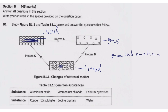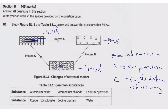Sublimation is the direct change of state from a solid to a gas when you heat that substance. Process B is a change from liquid to gas, so process B is evaporation. Then process C should be condensation or freezing.